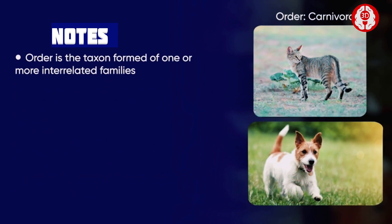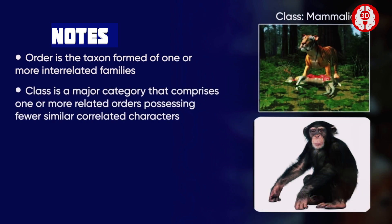Order is the taxon formed of one or more interrelated families that possess some similar correlated characters. Class is a major category that comprises one or more related orders possessing fewer similar correlated characters.